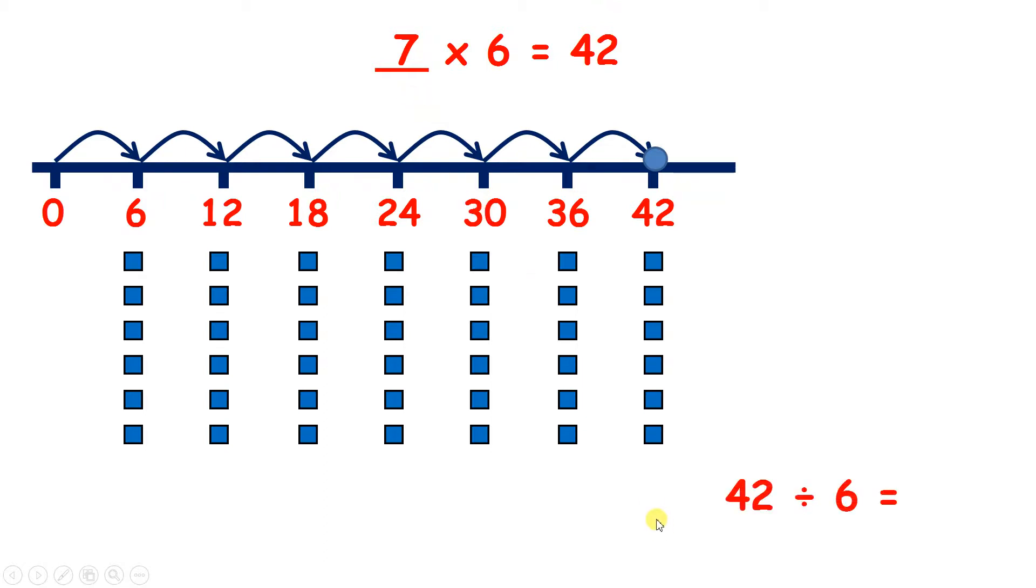But what we've really done here is divide 42 by 6. And we got 7 groups, so 42 divided by 6 is 7. And if we know that 42 divided by 6 is 7, we know that 7 times 6 is 42.